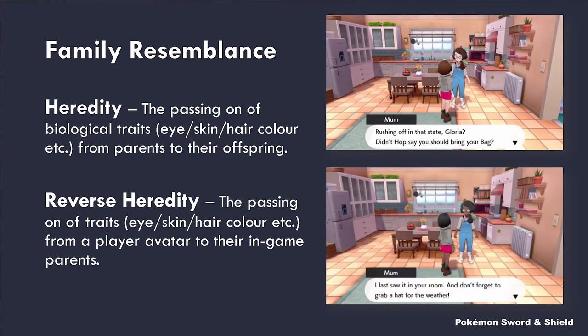Going on to the next game, Pokemon Sword and Shield, the developers addressed this by adding what I've called reverse heredity. Regular heredity is when biological traits like eye color, skin color, and hair color are passed from parents to children. Reverse heredity is the phenomenon of creating a player avatar and having whichever race and physical traits you've chosen be passed up to the in-game parents. Another game that has this is Fallout 3.